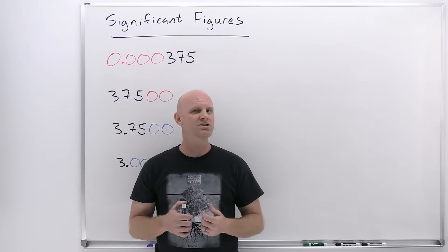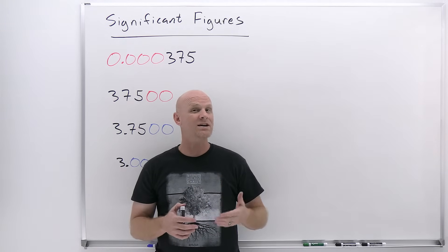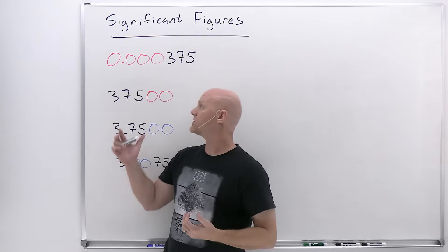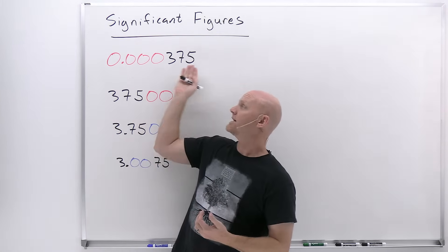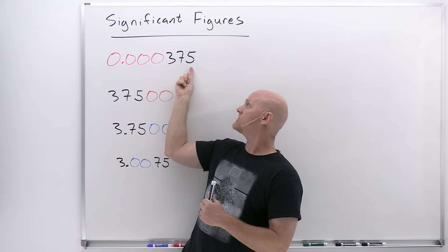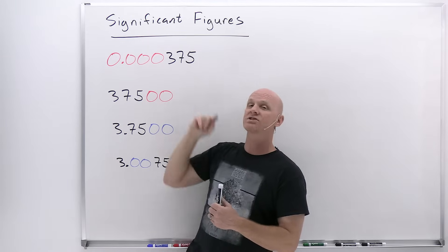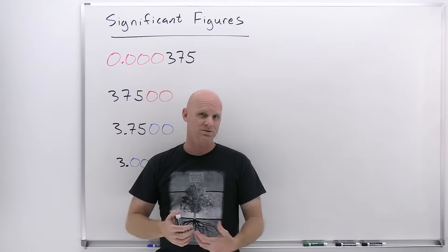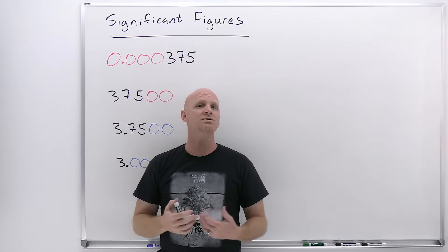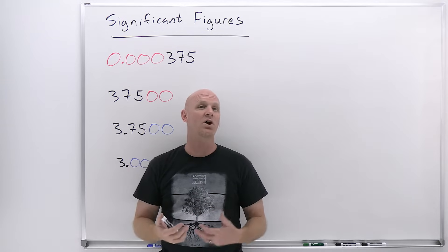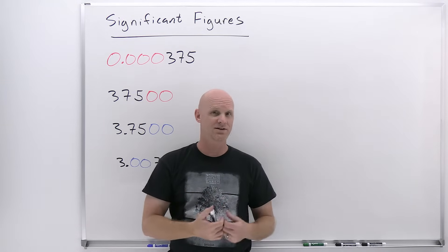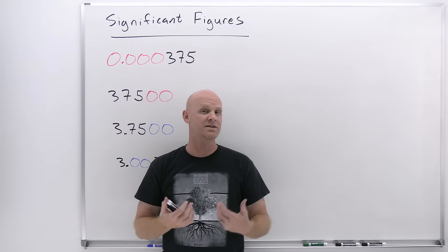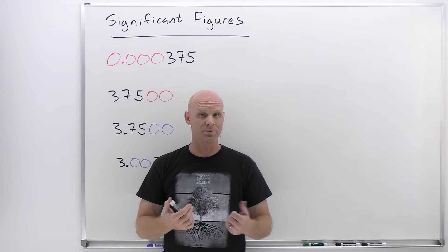There's going to be a relationship to how exactly we know a number. It turns out that every non-zero digit is significant — that's not the issue. It's the zeros. Sometimes zeros are significant, and sometimes zeros are not significant. We've got rules to help distinguish that difference, and it's going to be super important.